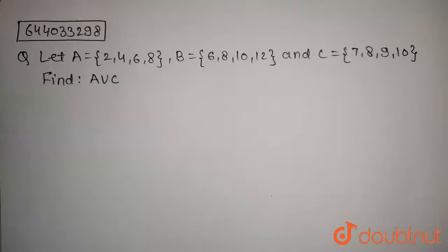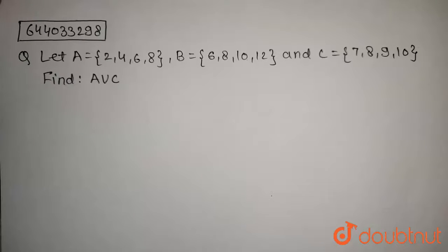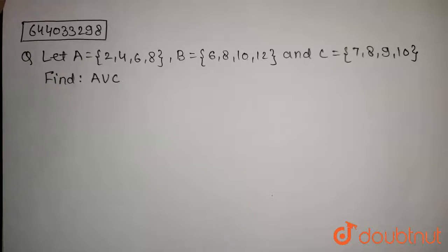Let A be the set containing elements 2, 4, 6, 8, B containing elements 6, 8, 10, 12, and C containing elements 7, 8, 9, 10. Then find A union C.